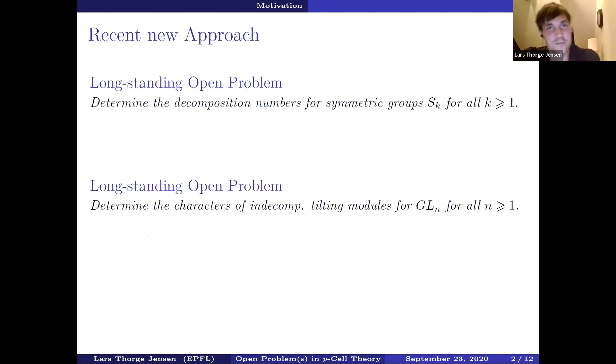So for motivation, I want to consider the following two open problems. The first one is to determine the decomposition numbers for symmetric groups S_k for all k greater or equal one. That means you start with an irreducible representation in characteristic zero for a symmetric group. You choose an invariant lattice in this representation and you reduce this mod p and you determine which modular irreducible representations occur in there. These multiplicities give you the decomposition numbers. This is in general a very difficult problem because the modular irreducible representations are difficult to calculate.